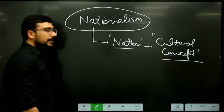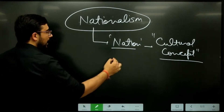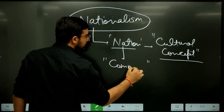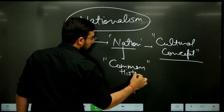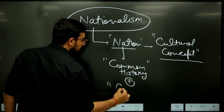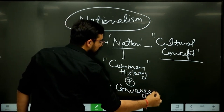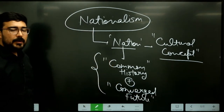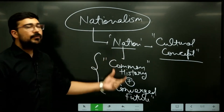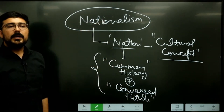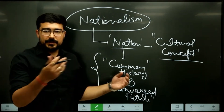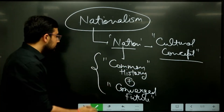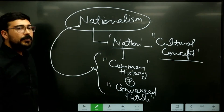How do we see the development of a nation? Development of a nation happens when people perceive that they have a common history plus they have a converged future and they are going to live together without any major differences. When these two things come into being, we see the development of a nation, and this feeling is known as nationalism.